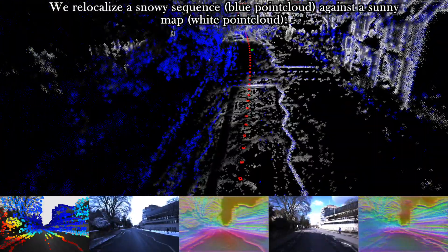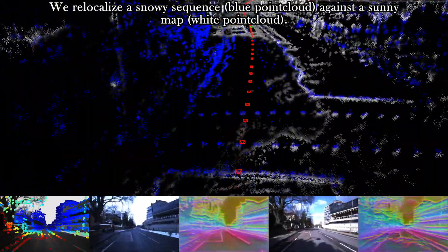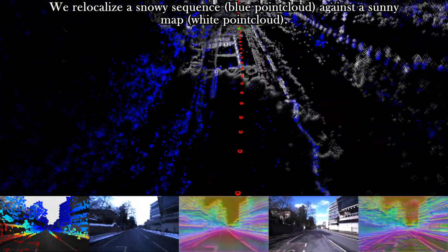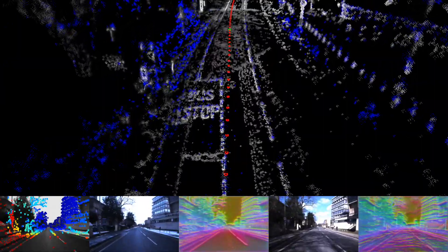You can see the point cloud of the map in white and the point cloud of the current sequence in blue. They align very well, which shows that the relocalization is accurate.